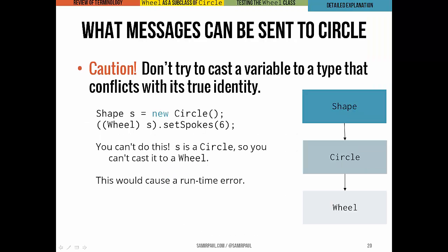Now be careful. You don't want to cast a variable to a type that is actually in conflict with its actual identity. This is going to give you an error, a runtime error. So here's an example of that kind of mistake. If we had a Shape variable s, and we pointed it at a Circle object, and then we tried to cast that Shape s to a Wheel, well, we can't do that. Because the object that we're working with is a Circle. So we can't cast it to a Wheel and try to use a Wheel method on an object that is really a Circle.